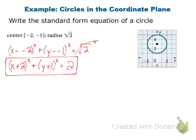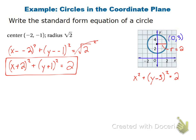Next problem — same thing. Let me draw my y-axis and x-axis. The center of that circle is at the ordered pair 0, 3. Just by looking at this, I've got a radius of 2. So I'm going to write the equation: x squared plus y minus 3 squared is equal to 2 squared, and 2 squared is 4. So there's my standard form equation.